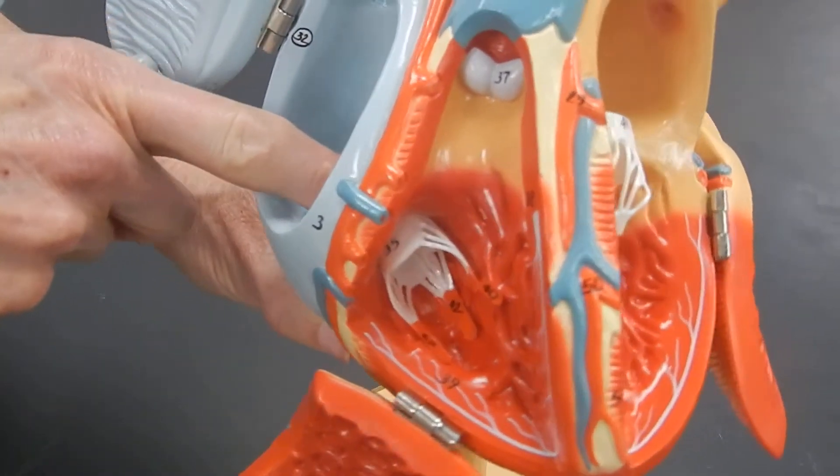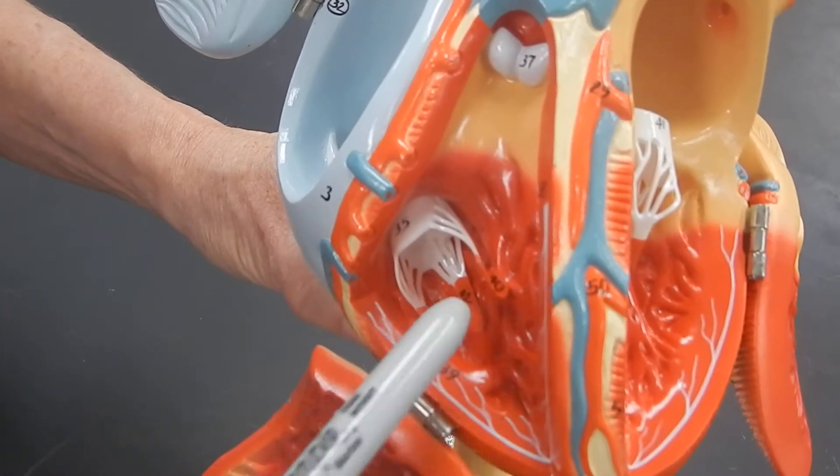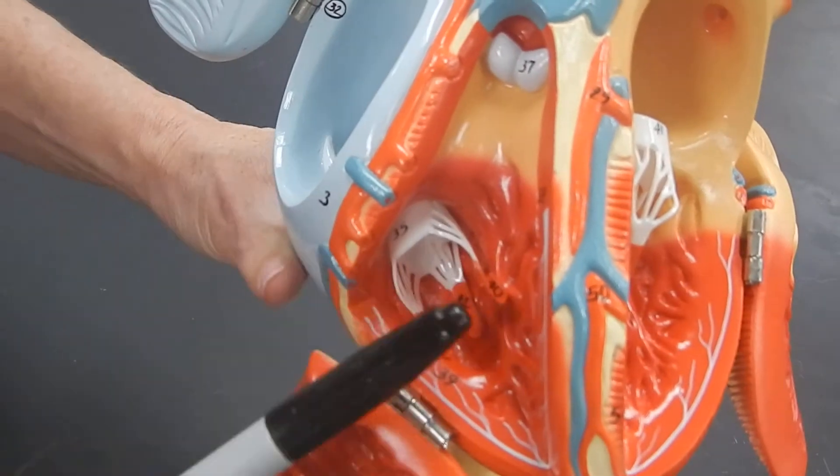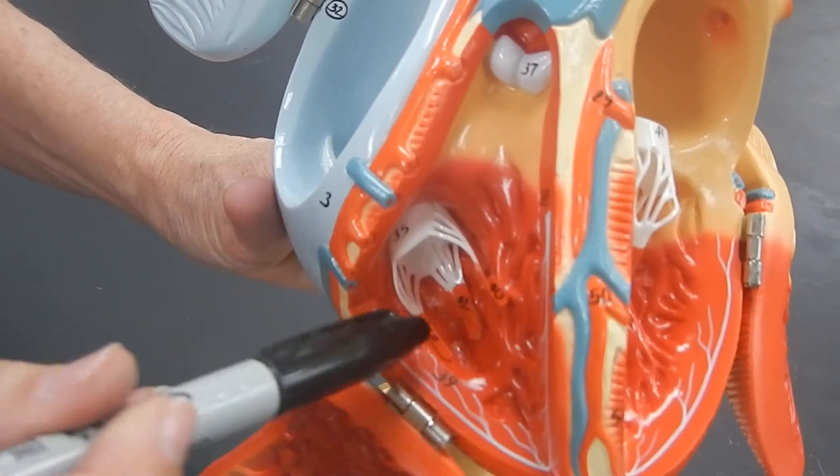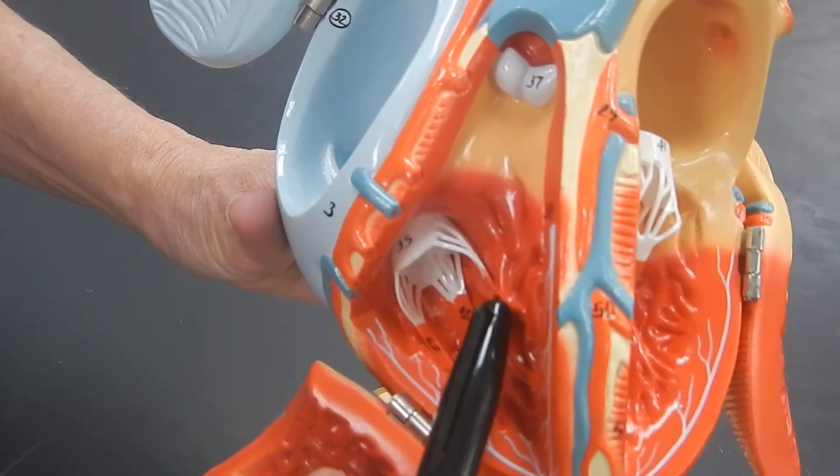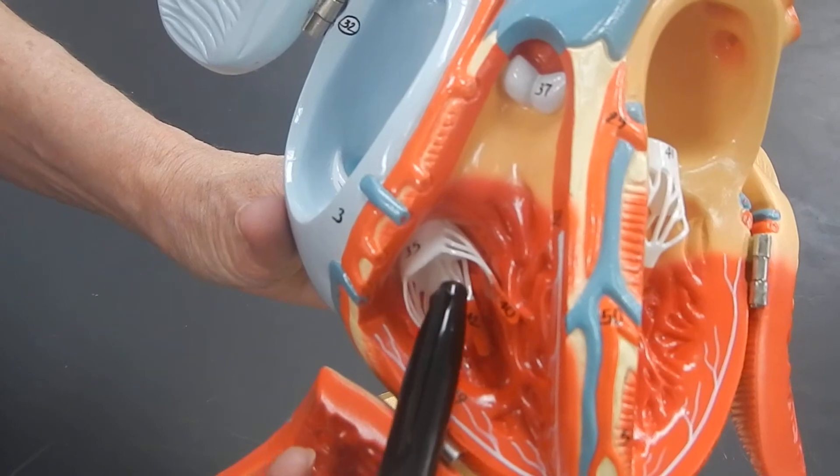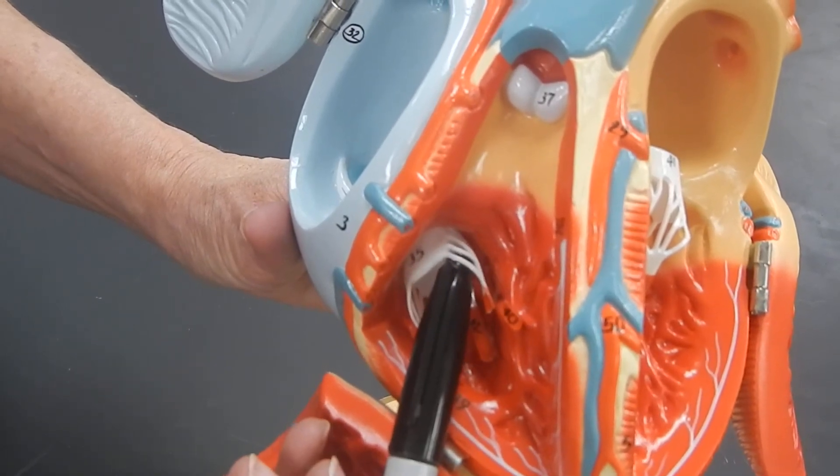The tricuspid valve is attached to these muscles here. These muscles are called papillary muscles, and the valve is attached to the papillary muscles by these fibrous cords that are called chordae tendinae.